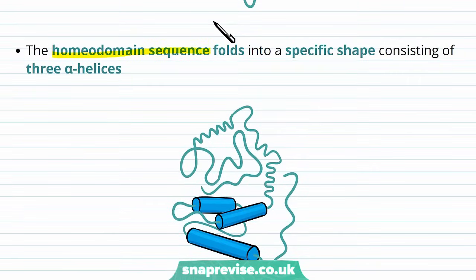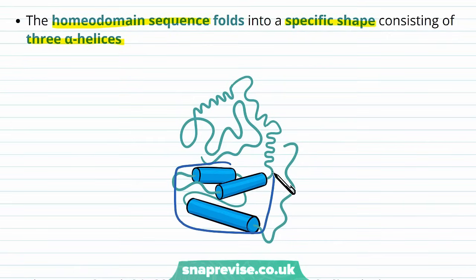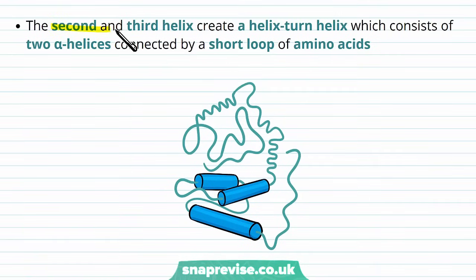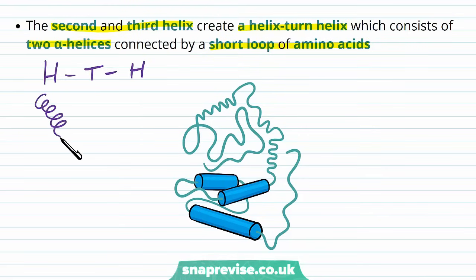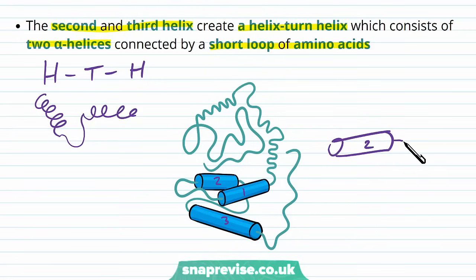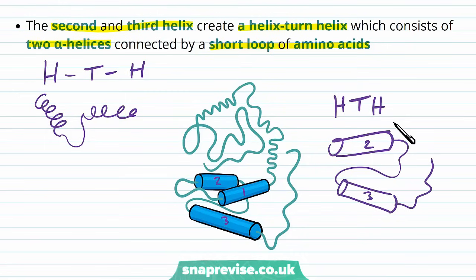The homeodomain sequence, which is that part of the protein, folds into a specific shape and has three alpha helices. In the diagram, the homeodomain contains three alpha helices shown as blue cylinders — alpha helix one, two, and three. The second and third alpha helices create a helix-turn-helix structure, which consists of two alpha helices connected by a short loop of amino acids. So we get a helix, then a turn, then a helix again — three parts. Between the second and third alpha helices we have a turn of amino acids, and then the protein carries on.